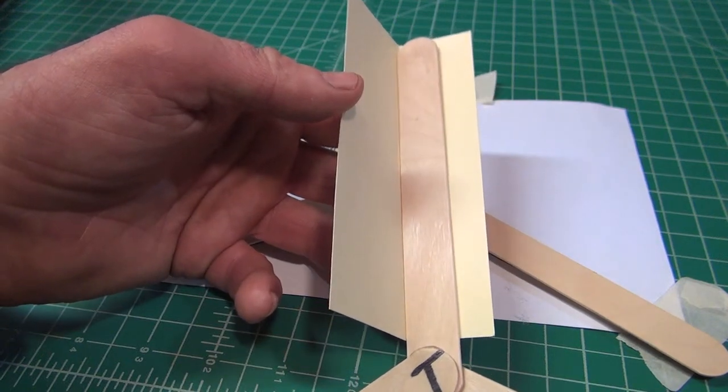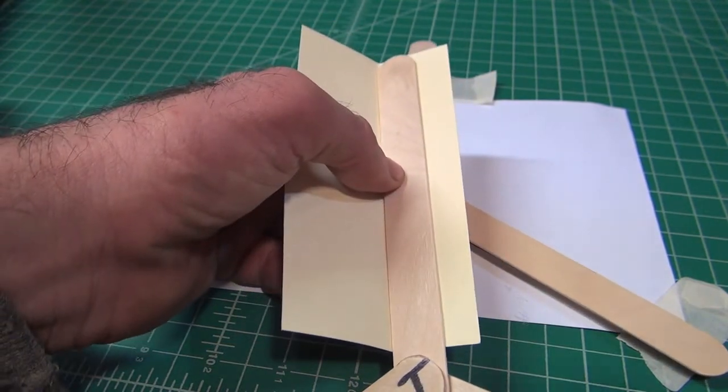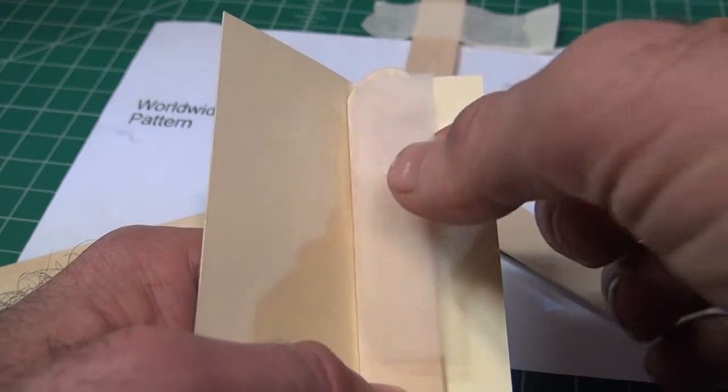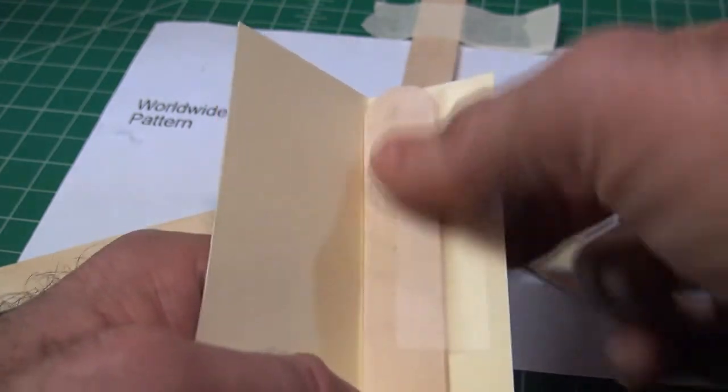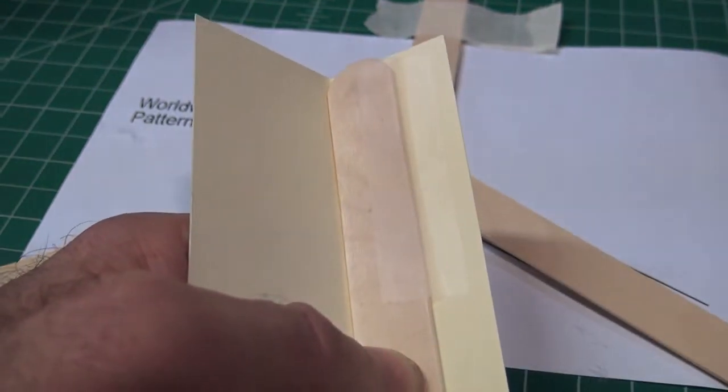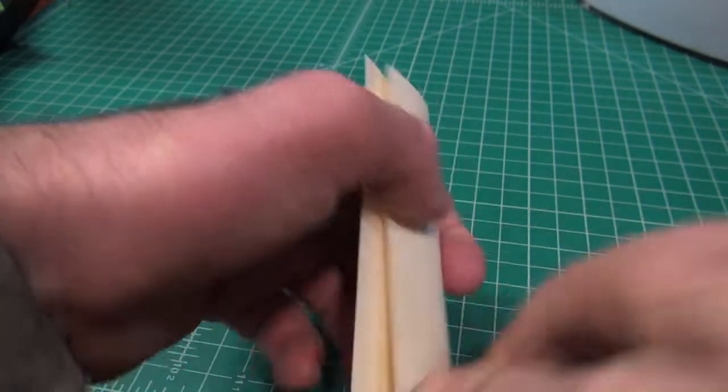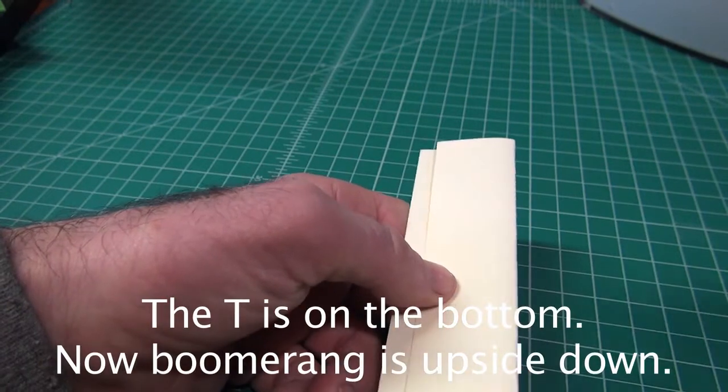Wedge the left edge of the tongue depressor against the fold. Hold it there while you tape along the other edge. I find it's easier to tape half at a time. Push all the tape down hard.